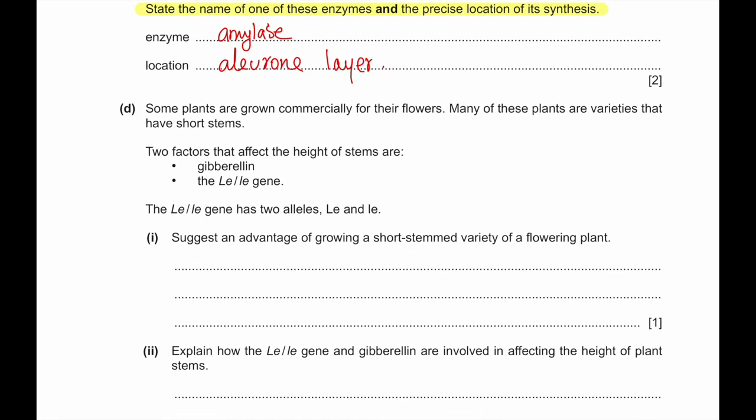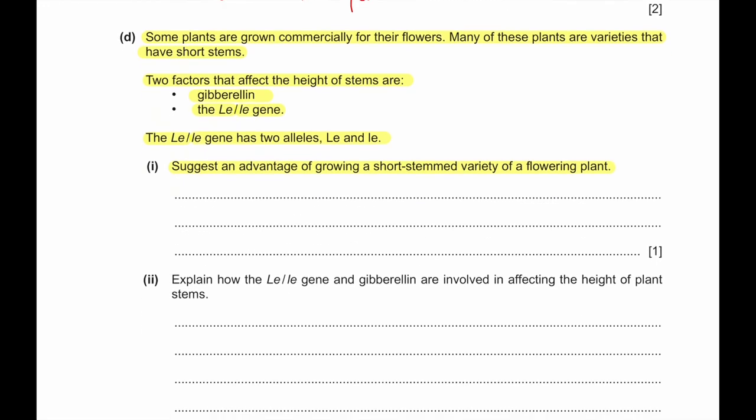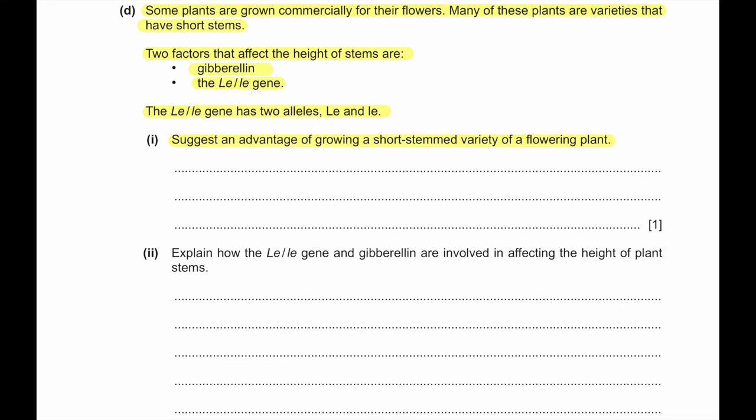Part D. Some plants are grown commercially for their flowers. Many of these plants are varieties that have short stems. Two factors that affect the height of stems are gibberellin and the Le gene. The Le gene has two alleles, which are capital LE and small le. Suggest advantages of growing a short-stemmed variety of flowering plant. A short-stemmed variety will use less energy to make the fibrous stem, so it can put more energy in producing more flowers and larger flowers. They are less likely to be damaged by wind and heavy rain.